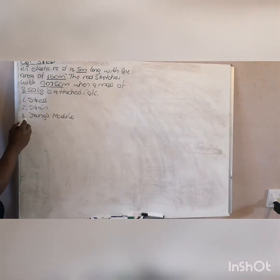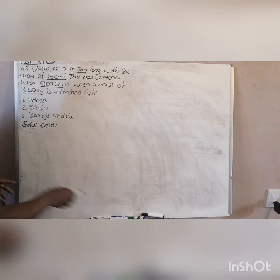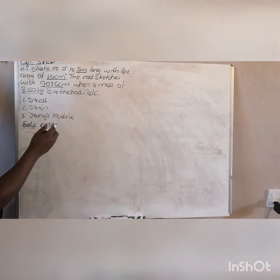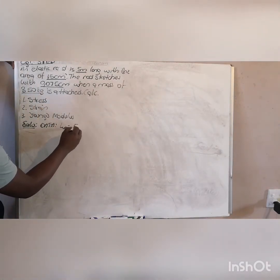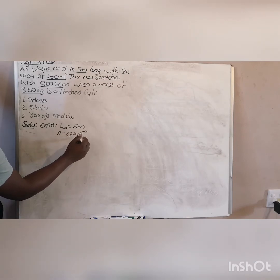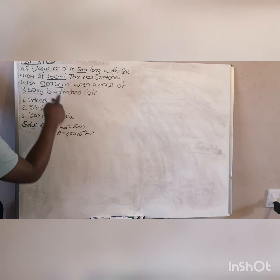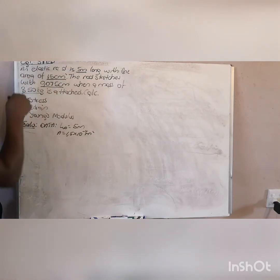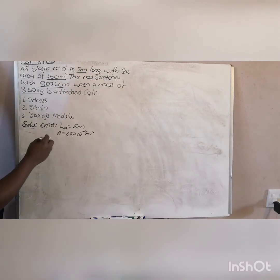So for your data, you are given: length original is five meters, you are also given the area which is 1.5 times 10 exponent negative 4 meter squared. I'm going from centimeter squared to meter squared - it is 10 squared negative 2, all squared, which would be 10 times 10 exponent negative 4.